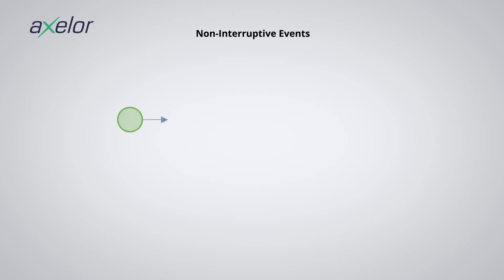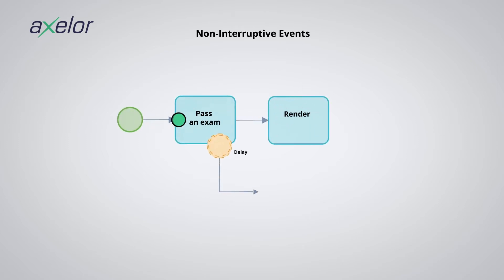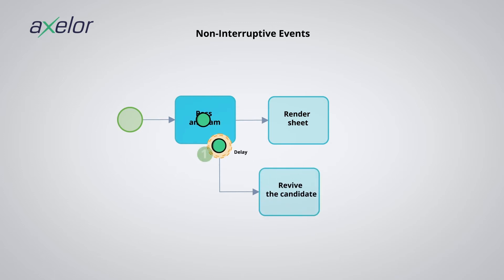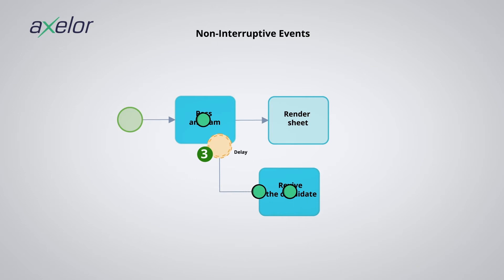Non-interruptive events: as long as the activity 'pass an exam' remains unfulfilled, at each trigger of the boundary event a token is created and joins the process. Note that there are as many tokens created as triggers of the boundary event. As soon as the 'pass an exam' activity is satisfied, we have two active process branches independent of each other that will run.